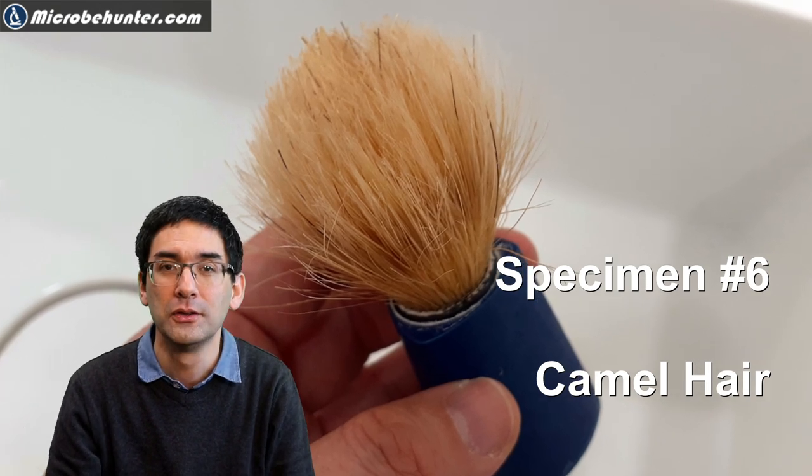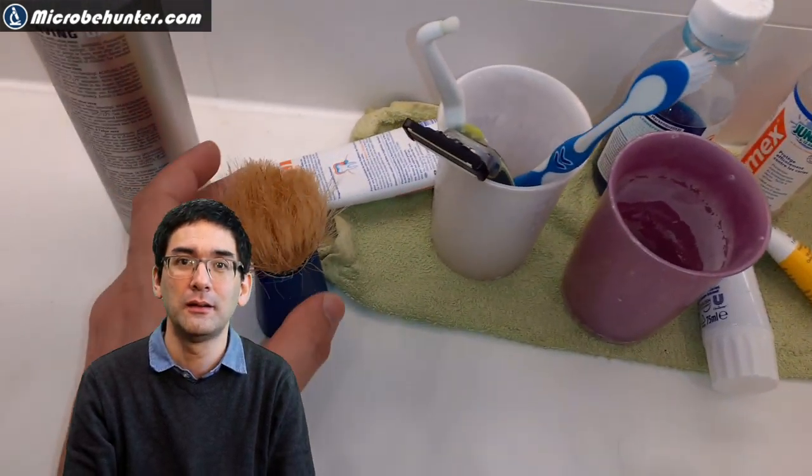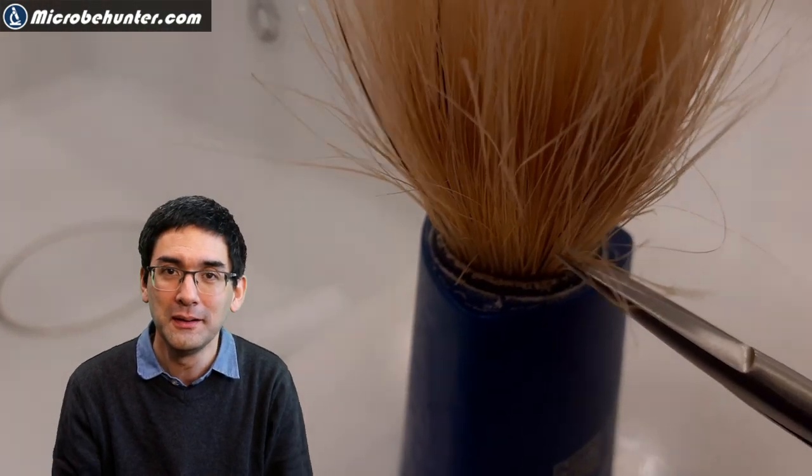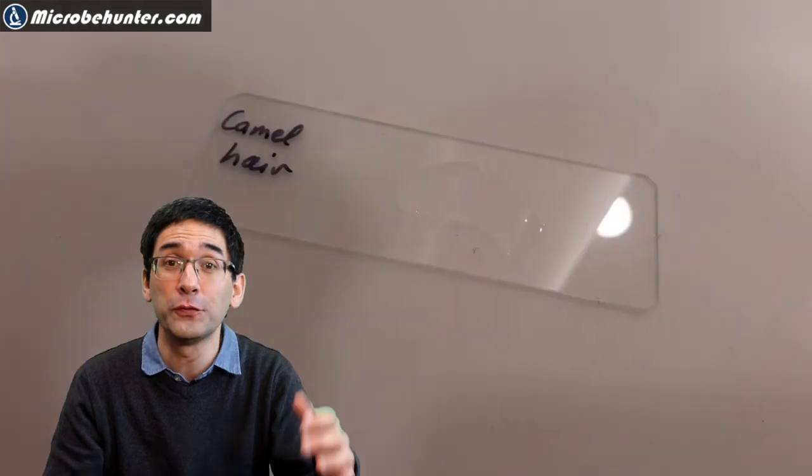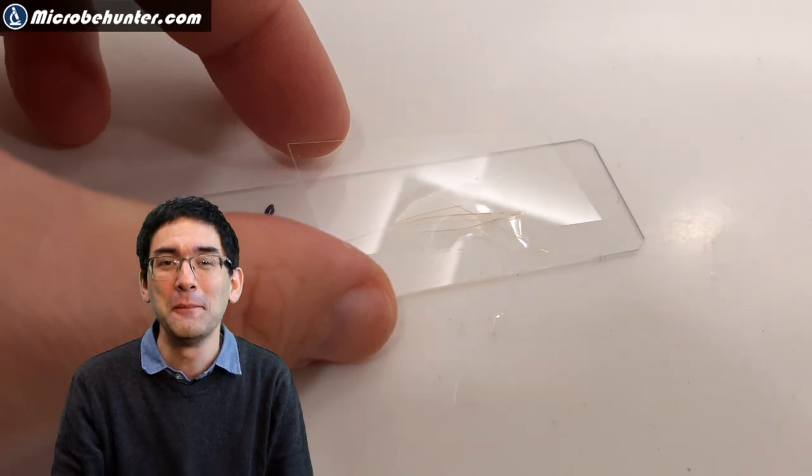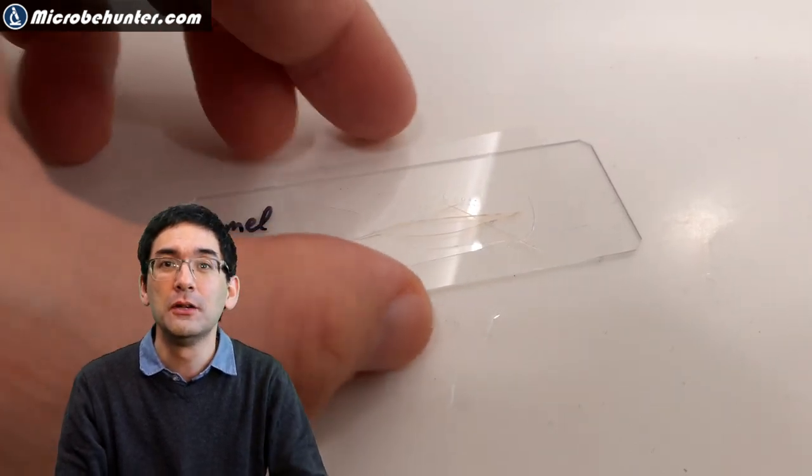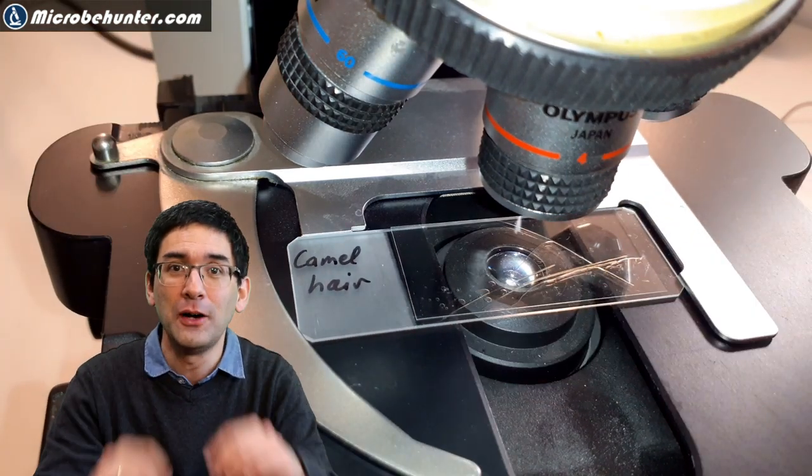Camel hair. You didn't believe it, I didn't believe it myself actually, that yes, there is also camel hair in my apartment. This is where I sacrificed a little bit of the camel hair by cutting off some of the hair. Sometimes there are also brushes that you use for cleaning optical lenses, often made of camel hair. I'm going to put the camel hair under the microscope as well. I used water, this was perfectly fine.